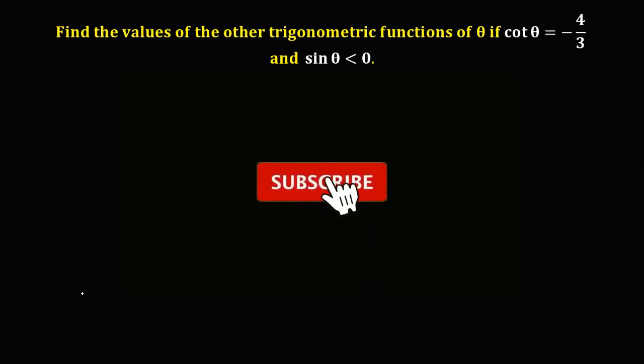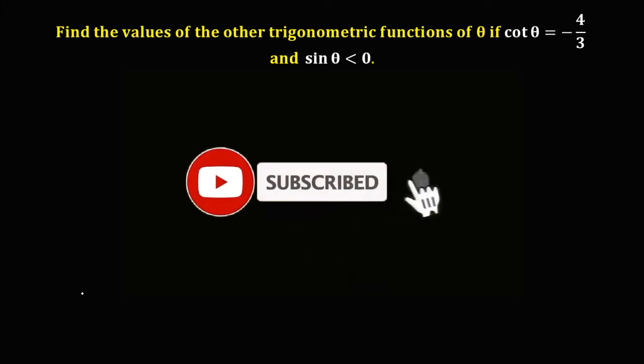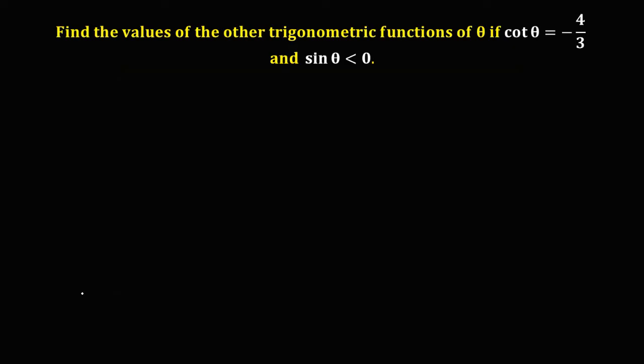Welcome to MathStoria. Let's solve this problem: find the values of the other trigonometric functions of theta if cotangent theta is equal to negative 4 over 3 and sine theta is less than 0.